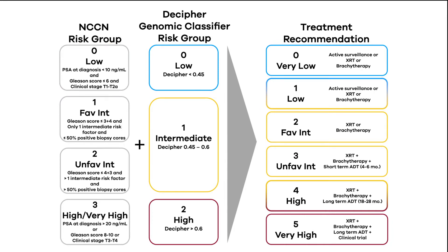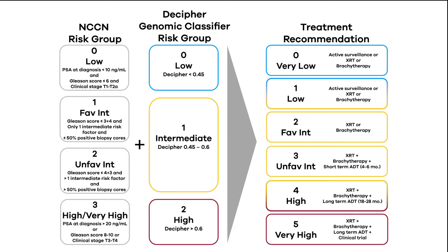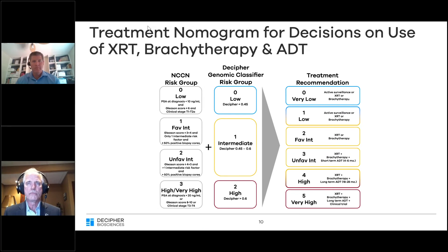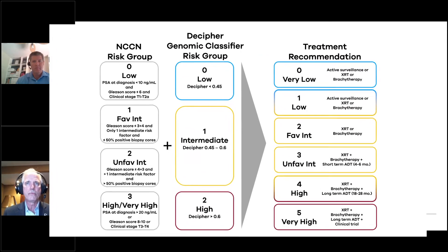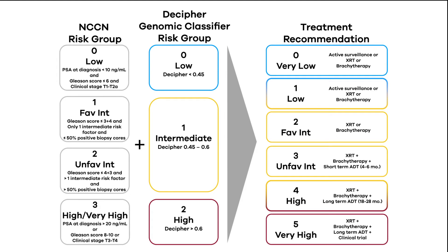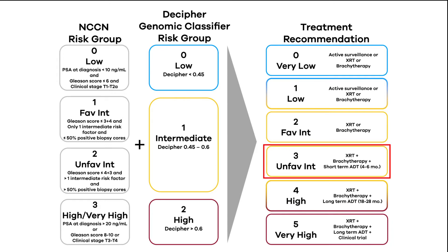When we get into that challenging group of intermediate-risk cases — either favorable intermediate or unfavorable intermediate — that's when we're all challenged to ask: when is the appropriate use of hormone therapy? The scores that Dr. Spratt put forward would be helpful. We continue to offer monotherapy for patients who have that sum score of two, favorable intermediate risk. But when they have unfavorable intermediate risk, we consider a short course of androgen deprivation therapy, four to six months.